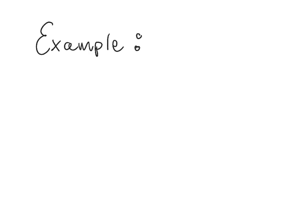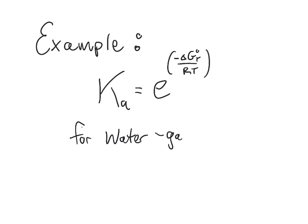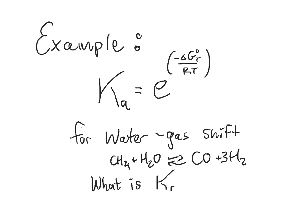So I want you, since we have just gone to the trouble of defining Ka. So for that water gas shift, that same reaction we keep solving, the one where it's methane plus steam goes to carbon monoxide plus hydrogen, there's three hydrogens, that reaction, go ahead and tell me what is Ka. And that is based on delta G at 298, which you worked out already.